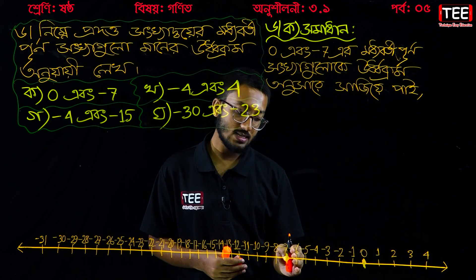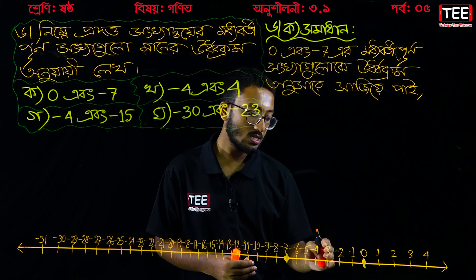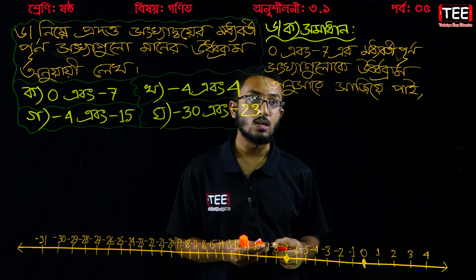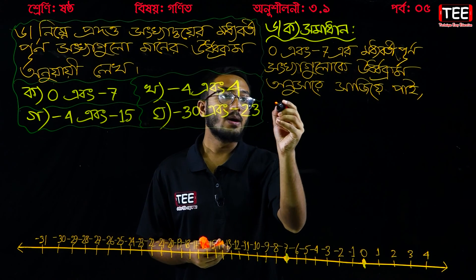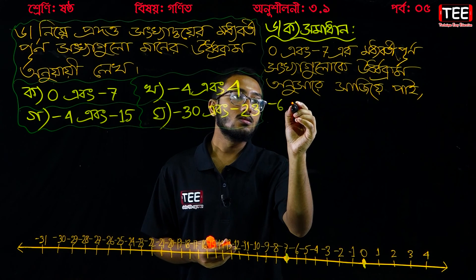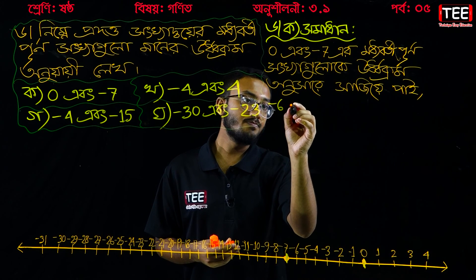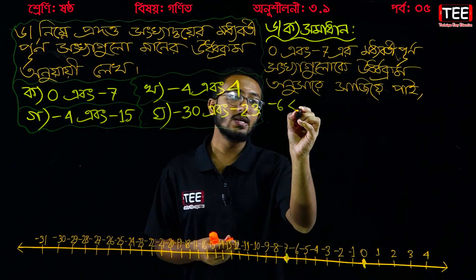Minus 6, minus 5, minus 4, minus 3, minus 2, minus 1 — what is this? Minus 6. We cut the border, we cut the border.